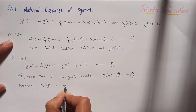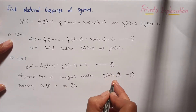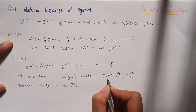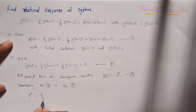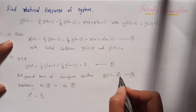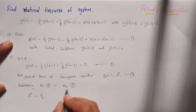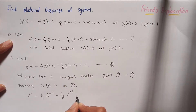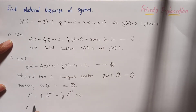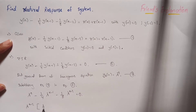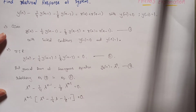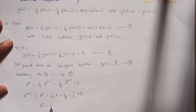Substituting equation 3 into equation 2: y(n) becomes lambda^n, y(n−1) becomes lambda^(n−1), and y(n−2) becomes lambda^(n−2). Taking lambda^(n−2) as common, we get lambda^(n−2) times [lambda² − (1/4)lambda − 1/8] equals 0.